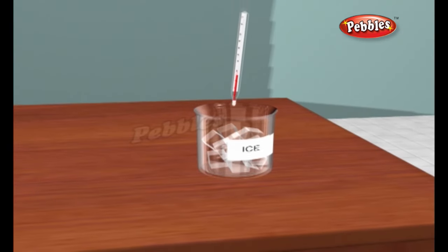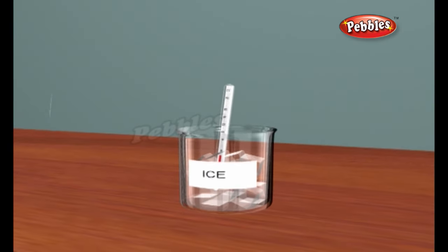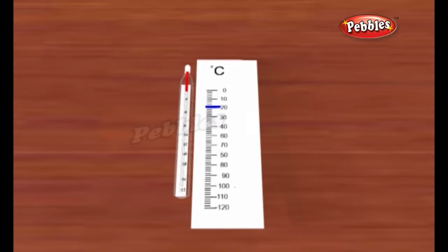If we dip our thermometer in some ice, we can observe where the mercury level comes to and mark the lowest point on our scale, which will be roughly 0 degrees Celsius.